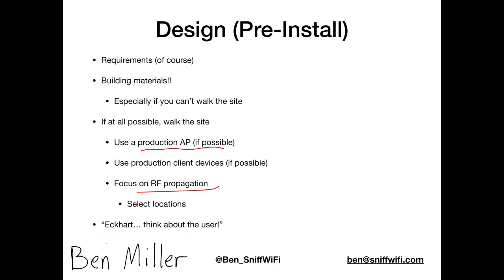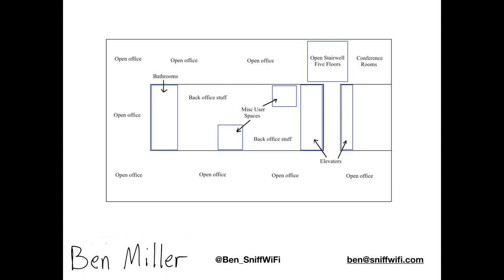I'll walk to various areas of the site just to get an idea of how radio frequency is propagating through that site. The goal isn't necessarily to walk everywhere — I'm really only walking select locations. The goal is just to get an idea of how RF is going to propagate. To give you an example, I have this little diagram — an approximate diagram of an open office space I did surveying for. It was part of a multi-floor office deployment. You can see the stairwell in the upper right. There's a big open space with elevator areas.